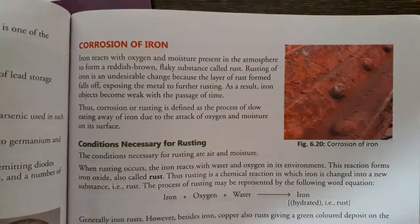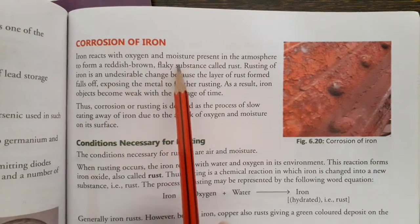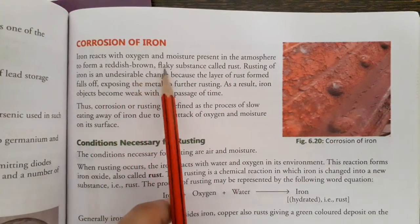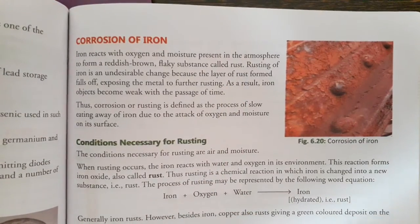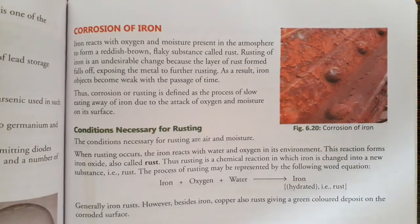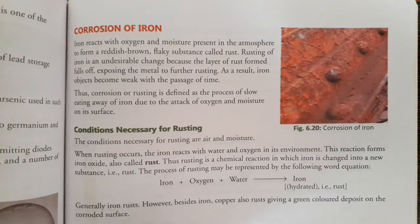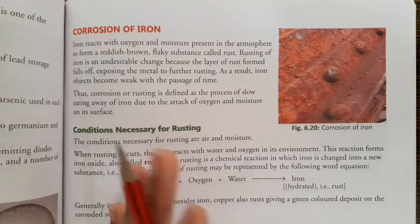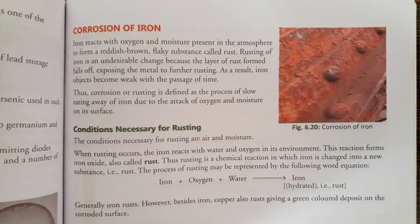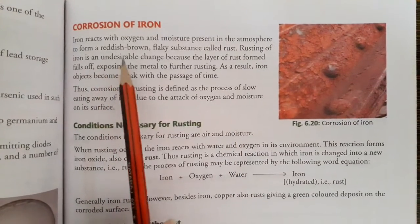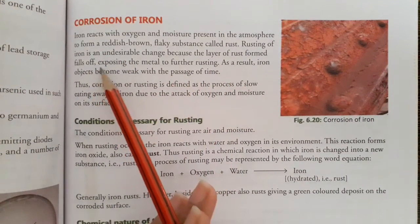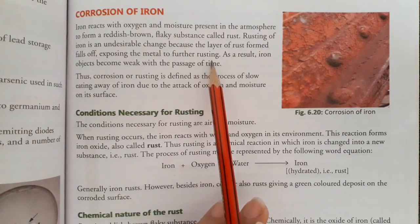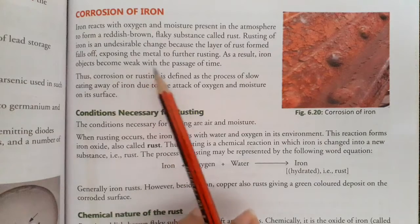Now, corrosion of metals. Iron reacts with oxygen and moisture present in the atmosphere to form a reddish-brown flaky substance called rust. Rusting of iron is an undesirable change because the layer of rust falls off, exposing the metal to further rusting. As a result, iron objects become weak with the passage of time.